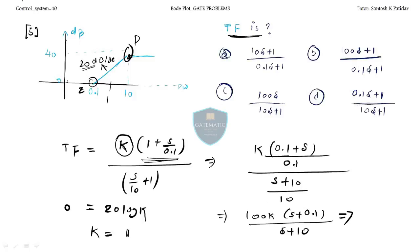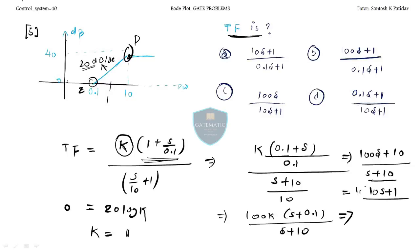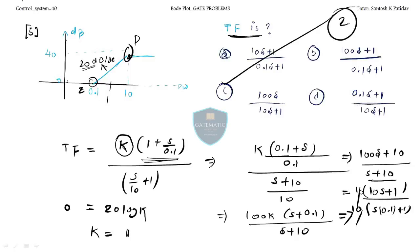Multiplying 100 inside: 100s + 10 divided by s + 10. Taking 10 out from numerator and 10 from denominator — the 10s cancel — leaving (10s + 1)/(0.1s + 1), which matches option A. You can expect two marks for this.